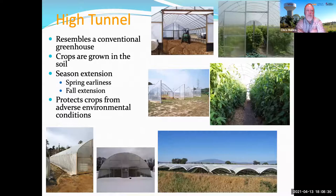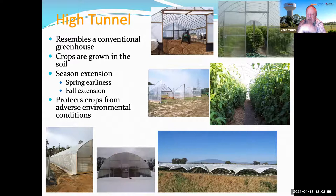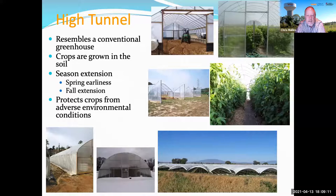Here are some definitions when we think about a high tunnel. They're a structure that resembles a conventional greenhouse, usually made out of a metal frame — but it can be wood or PVC. Crops are generally grown in the ground in conventional production, maybe on plastic mulch, bare ground, or even raised beds. We're looking for season extension — that earliness or pushing the growing season into the late fall — because the structure protects crops from adverse weather like light frost, rain, and hail.